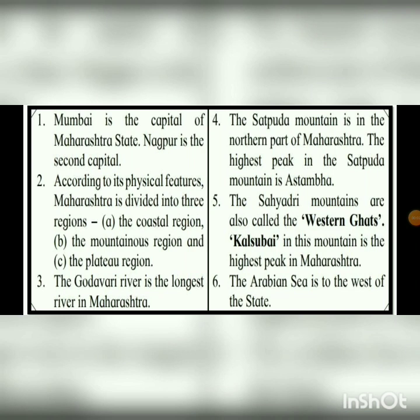We have already seen on the map that Mumbai is the capital of Maharashtra and Nagpur is the second capital. According to its physical features, Maharashtra is divided into three regions: the coastal region, the mountainous region, and the plateau region. The Godavari river is the longest river in Maharashtra. The Satpura mountain is in the northern part, with its highest peak being Astambha. The Sahyadri mountains are also called the Western Ghats, and Kalsubhai is the highest peak in Maharashtra. The Arabian Sea is to the west of the state.